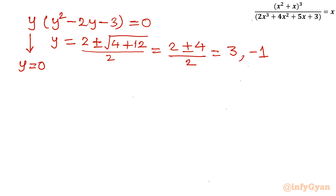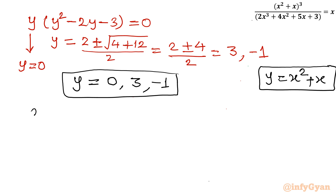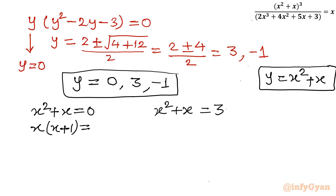Since y = x² + x, we now frame three quadratic equations. First: x² + x = 0. Second: x² + x = 3. Third: x² + x = -1. For the first equation, taking x common gives x(x + 1) = 0, so either x = 0 or x = -1. Remember, our excluded solution was x ≠ -1 for real values, so we reject x = -1.